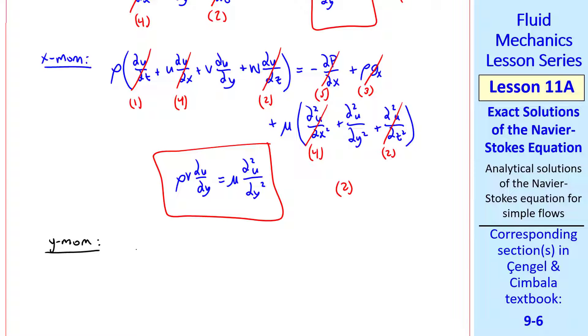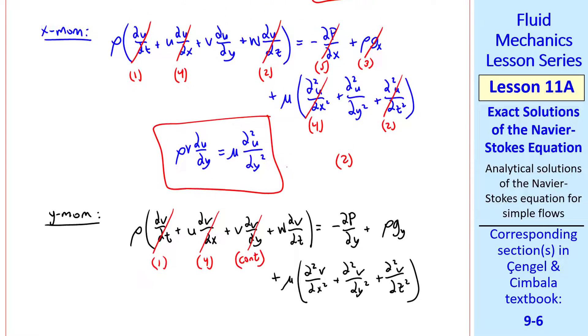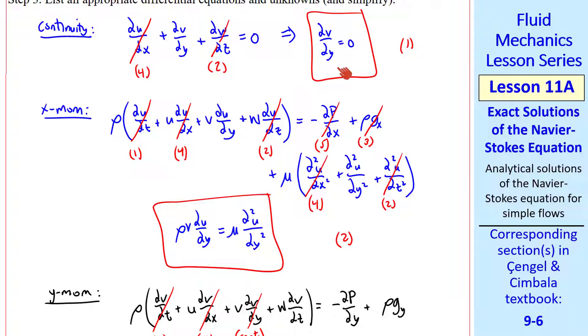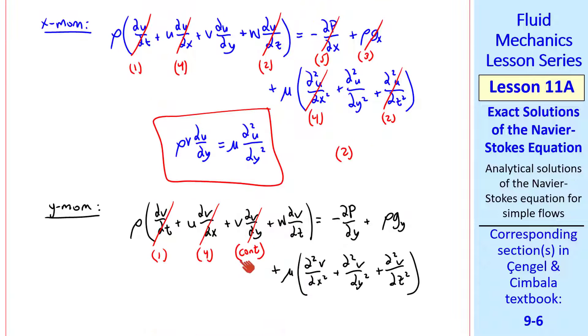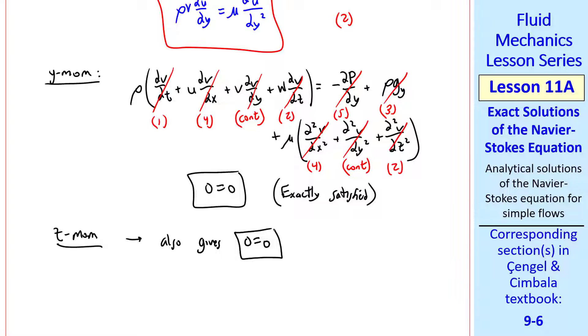We do the same with the y-momentum equation. I write out all the terms. Cross off the unsteady term, the fully developed terms, and by continuity equation one, del v del y is zero. 2D, pressure is constant, ignoring gravity, no changes in x. So this equation simplifies to zero equals zero. The z-momentum also gives zero equals zero when we apply all assumptions.